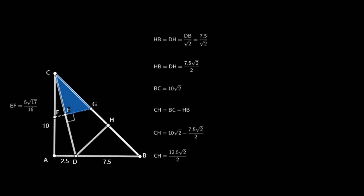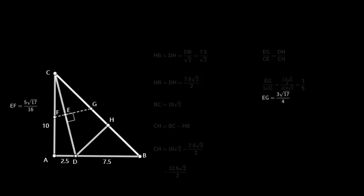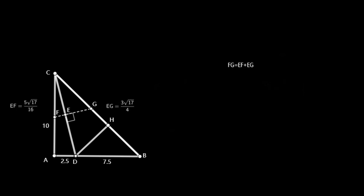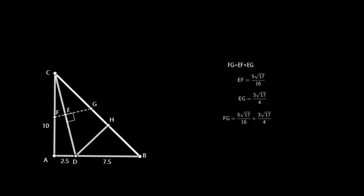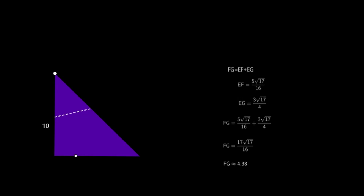Triangle CEG is similar to triangle CHD, so EG over CE equals DH over CH. Substituting: EG over 5 times the square root of 17 over 4 equals 3 over 5, giving EG equal to 3 times the square root of 17 over 4. Therefore FG equals EF plus EG, which equals 5√17/16 plus 3√17/4, giving FG equal to 17 times the square root of 17 over 16, approximately 4.38. When point D is at the one-quarter point of the bottom, the crease is about 4.38.